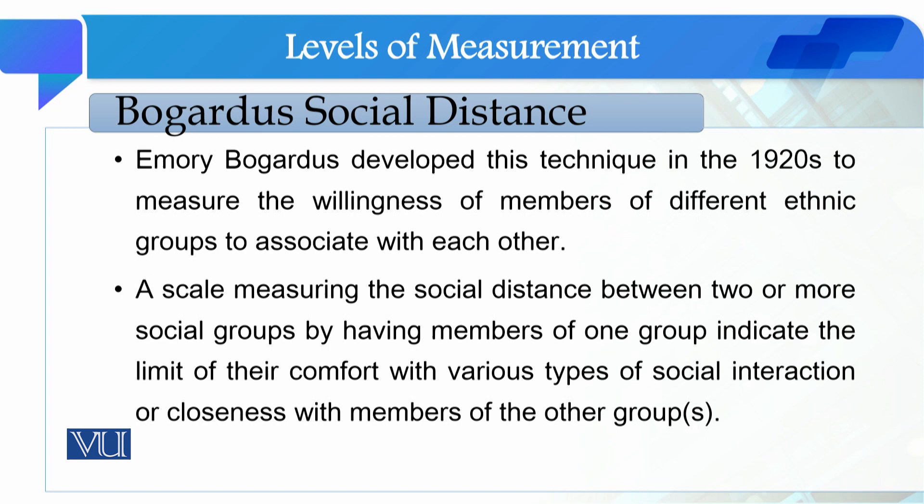The Bogardas Social Distance Scale was developed by Emory Bogardus in the 1920s to measure the willingness of members of different ethnic groups to associate with each other. The motivation was to understand how community members belonging to different ethnic groups integrate with each other and how distant they are from one another.